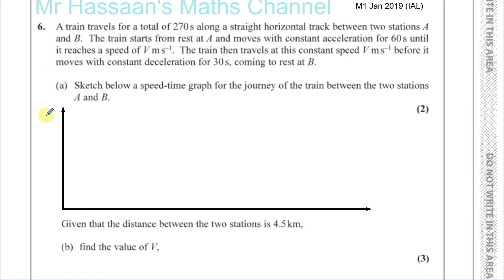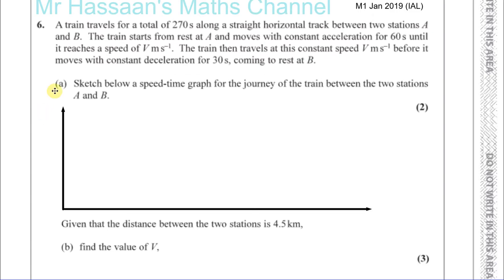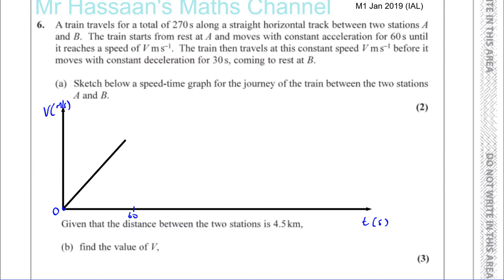I'm going to draw a pair of axes — velocity against time. Velocity is in meters per second, time is in seconds. It starts from rest at A, so that's at the origin (0, 0). It moves with constant acceleration for 60 seconds until it reaches a speed of V. Constant acceleration means it's going to be a straight line with a positive gradient.